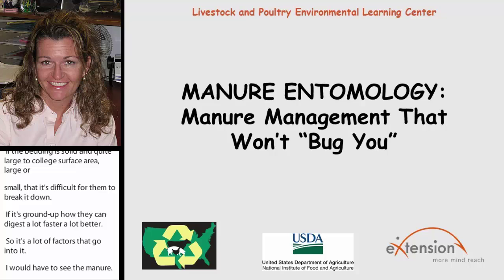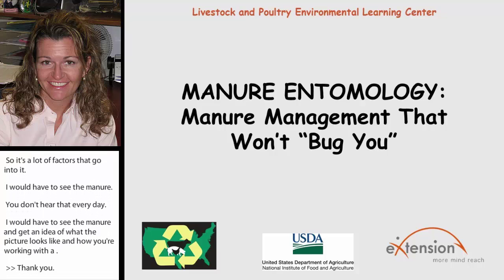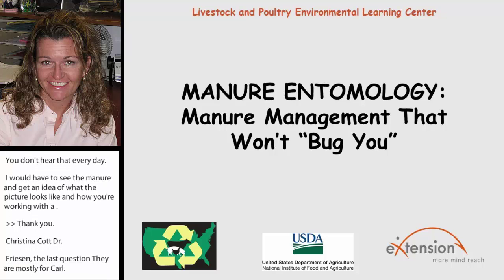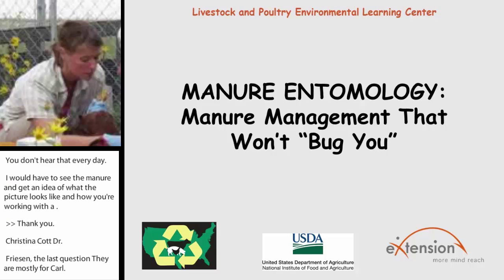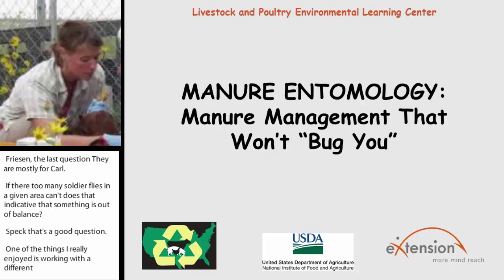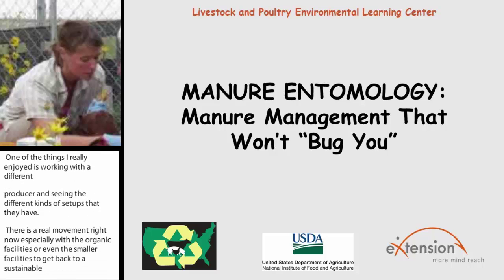Dr. Friesian, the last set of questions are for you, mostly from Carl. Carl asks: if there are too many filth flies in a given area, is that indicative that something is out of balance? That's a really good question. Working with different producers and seeing different setups, there's a real movement right now, especially with organic or smaller facilities, to get back to sustainable practices — incorporating rotational grazing and different animals following each other. In some cases that does seem effective, though it needs to be looked at more closely through a scientific lens.